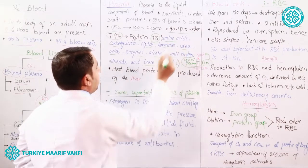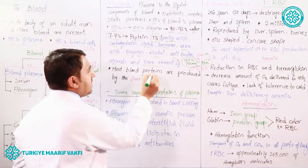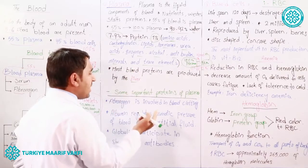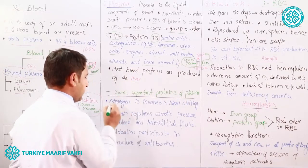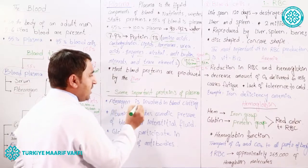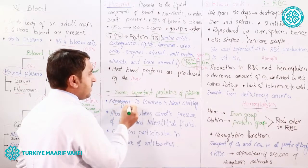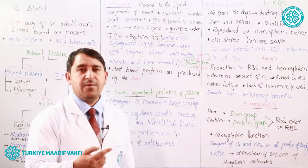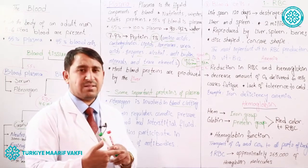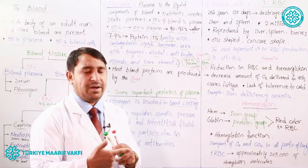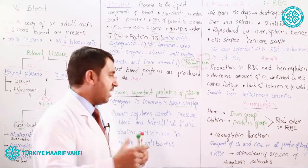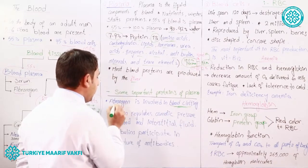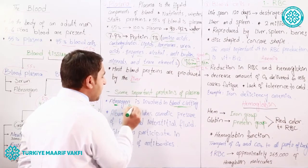Most blood proteins are produced by the liver. Some important proteins in plasma: the first is fibrinogen, a type of protein made by the liver. Its function is blood clotting. When we cut our finger and bleeding occurs, fibrinogen is responsible for stopping the bleeding by clotting the blood.